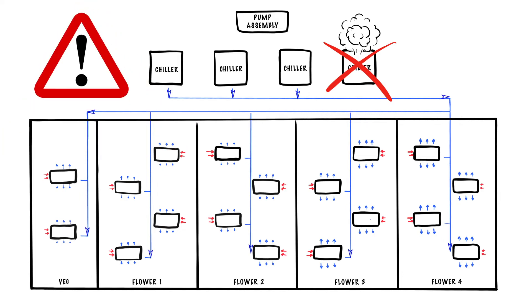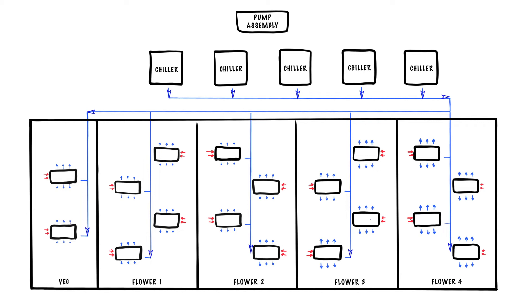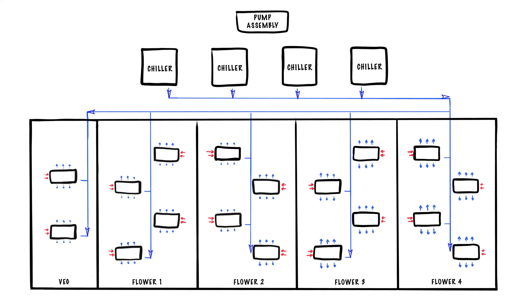To achieve easy N-plus-1 redundancy, facilities can simply place an additional chiller on the chiller bank, or slightly oversize existing units.